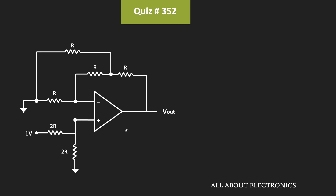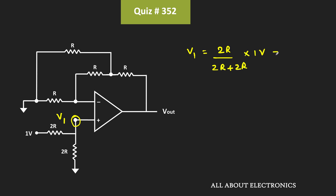Since the op-amp is the ideal op-amp, no current is flowing into the op-amp terminal. Therefore, by applying the voltage divider rule, we can find the voltage at this node. Let's say the voltage at this node is equal to V1. So V1 is equal to 2R divided by (2R + 2R) times 1V, which is equal to 0.5V.